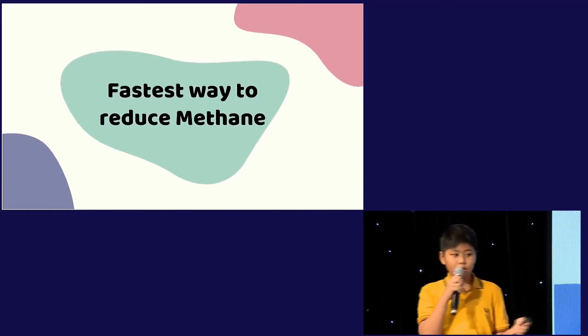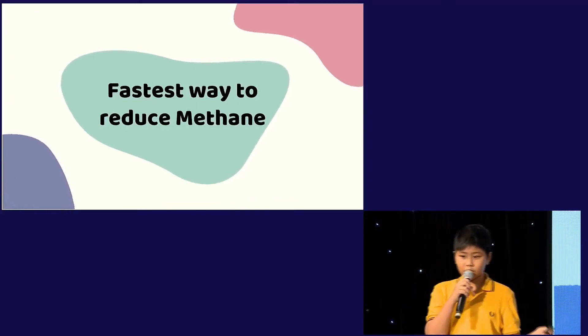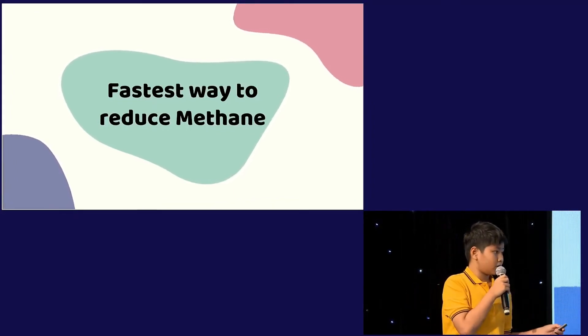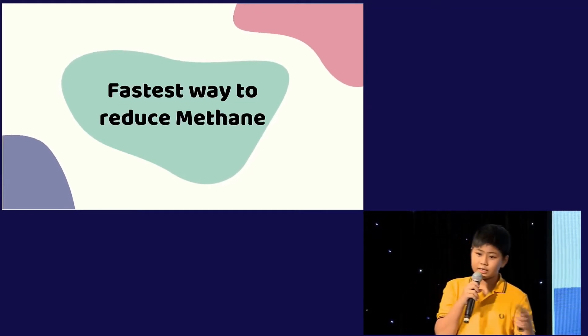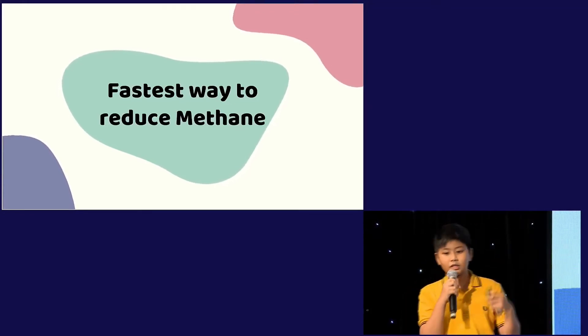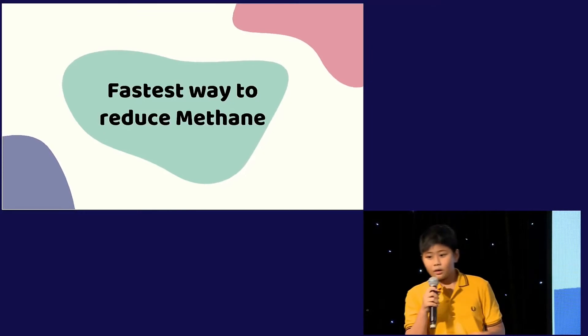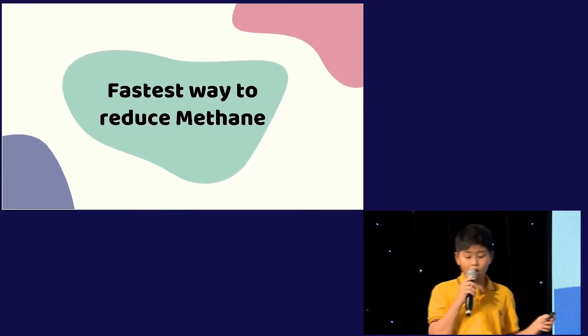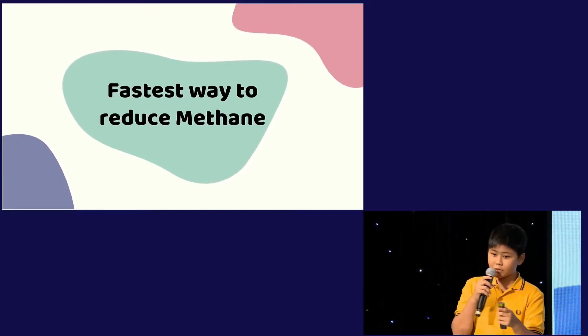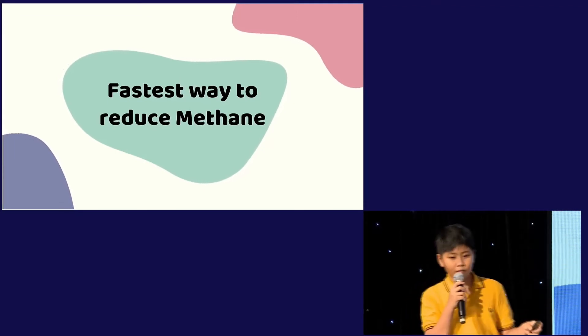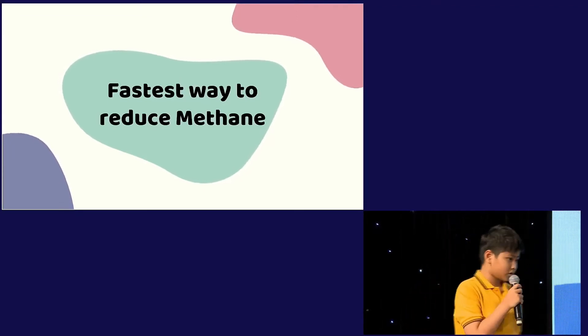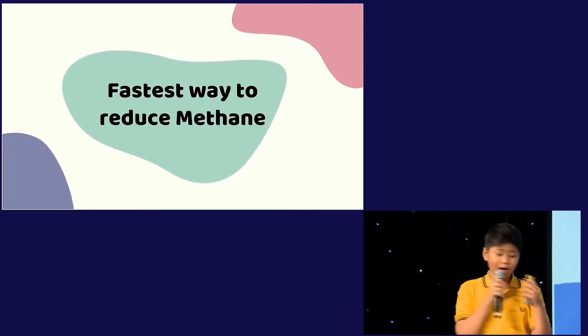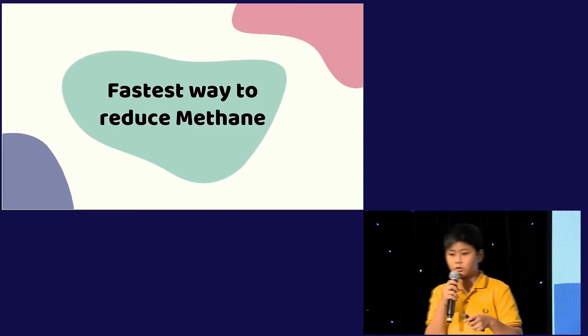At the near term, the way to reduce climate change risk is by reducing methane. Methane takes 1% of greenhouse gases, and carbon dioxide takes 99% of them. It seems unharmful, but actually that 1% of methane is actually more harmful than 99% of carbon dioxide. So how can we reduce the methane we produce quickly?